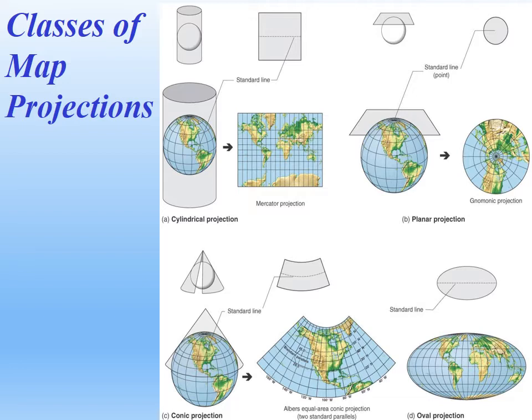If we're looking at a planar projection, we are talking about areas near the north pole that are preserved and quite accurate. The farther you are away from the north pole, the worse the distortion gets. Then we have the conic projection, which is accurate around the mid-latitudes but more distorted as you get away from the mid-latitudes. There's also another class of map projections created by computers using mathematical equations to distribute distortion throughout the planet more evenly — one example shown here is called the oval projection.